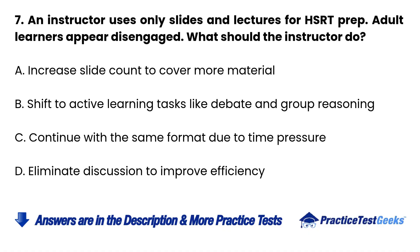Question 7: An instructor uses only slides and lectures for HSRT prep. Adult learners appear disengaged. What should the instructor do? a. Increase slide count to cover more material. b. Shift to active learning tasks like debate and group reasoning. c. Continue with the same format due to time pressure. d. Eliminate discussion to improve efficiency.